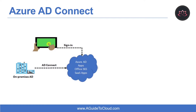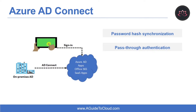The first feature is Password Hash Synchronization or PHS. Password Hash Synchronization is a sign-in method that synchronizes a hash of a user's on-premises AD password with Azure AD. The next feature is PTA, which is Pass-Through Authentication. PTA is a sign-in method that allows users to use the same password on-premises and in the cloud, but doesn't require the additional infrastructure of a federated environment.